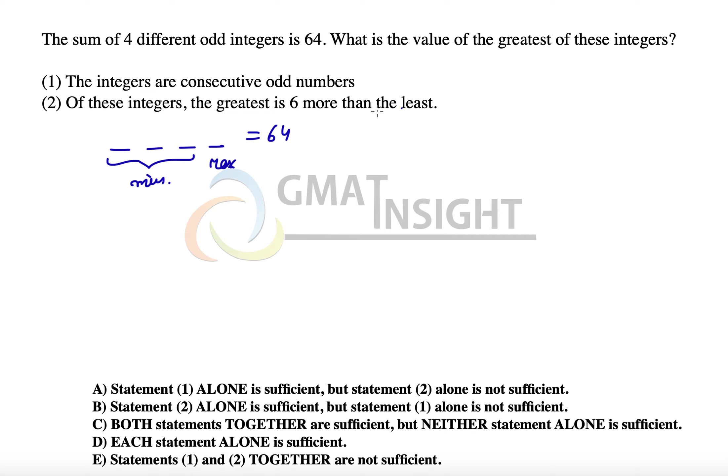Now we know the sum is 64. Let's start with the first statement: the integers are consecutive odd numbers. If the integers are consecutive odd numbers, there is actually no way we can maximize the numbers because then the sum has to be fixed.